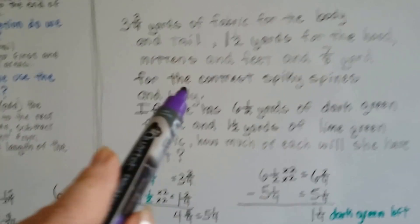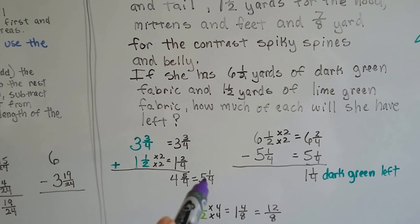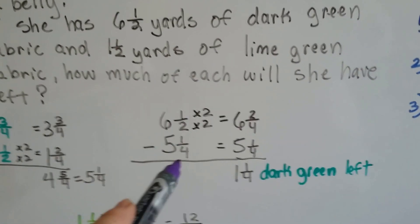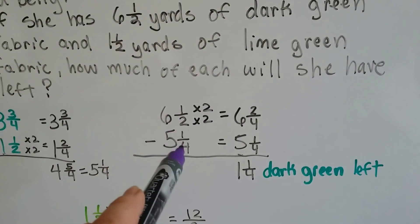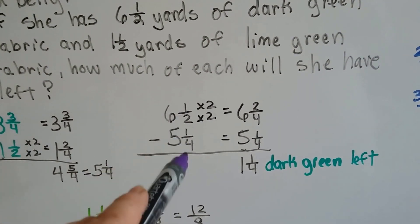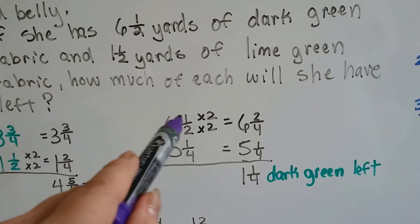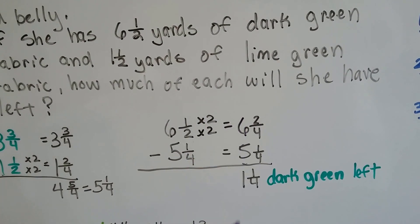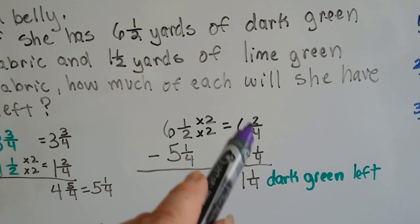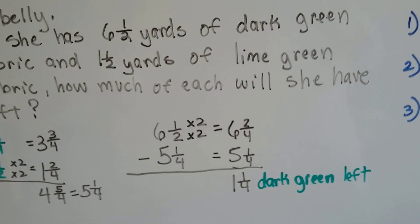She has six and a half yards of dark green but is only using five and one-fourth. So we subtract five and one-fourth from six and a half to find how much is left over. They need a common denominator, so they meet at four's house. Two times two is four, so one-half becomes two-fourths. Six and two-fourths take away five and one-fourth is one and one-fourth yards of dark green left.